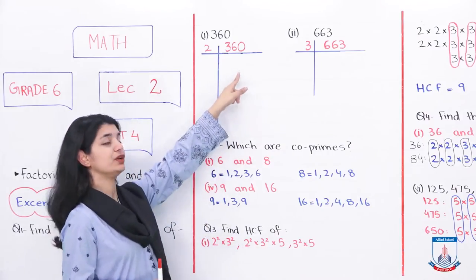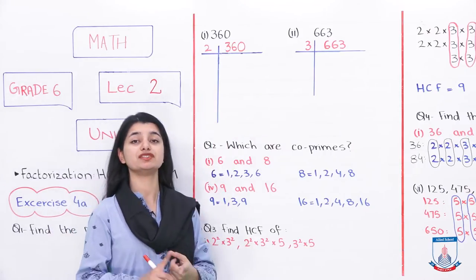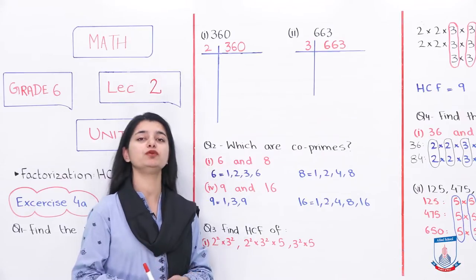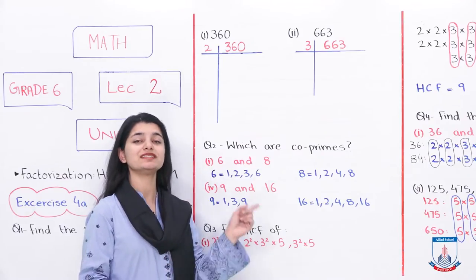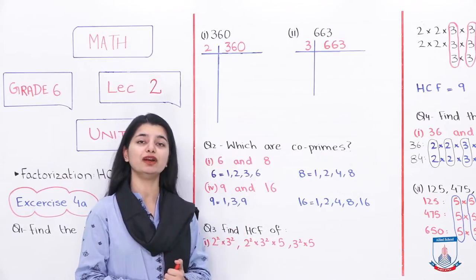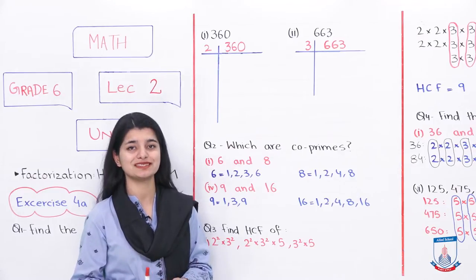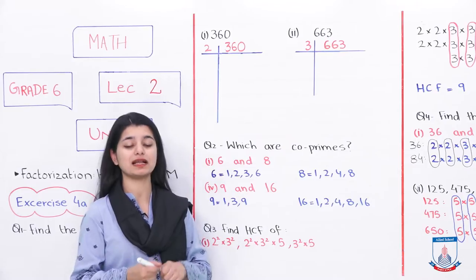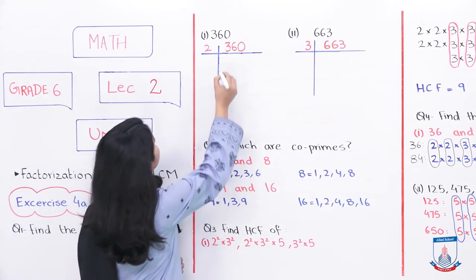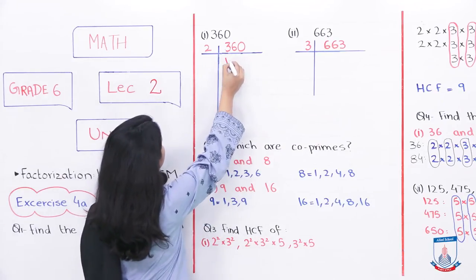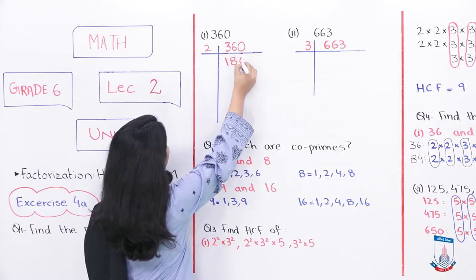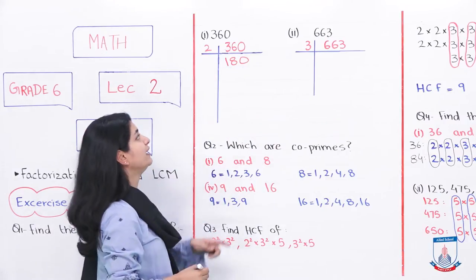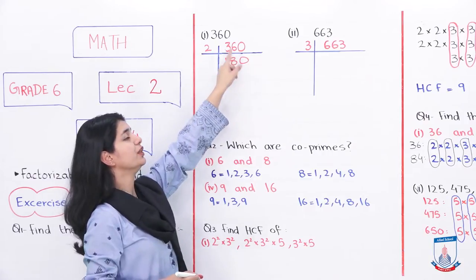Let's see whether 360 is divisible by 2 or not. As we know, numbers ending in 0, 2, 4, 6, or 8 can all be divided by 2. Hence 360 can be divided by 2. If you divide it, you will have 180. So basically 180 multiplied by 2 is 360. Two 180s are 360.